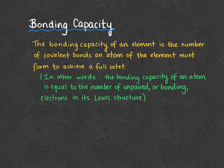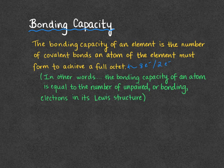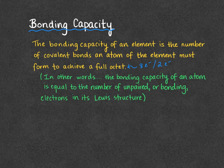Once we've mastered our Lewis diagrams, we can look at something called bonding capacity. The bonding capacity of an element is the number of covalent bonds an atom of that element must form to achieve a full octet — either eight electrons or two, depending on which period our element is in. The easier way to say that is that the bonding capacity of an atom is equal to the number of unpaired, or bonding, electrons in its Lewis structure.